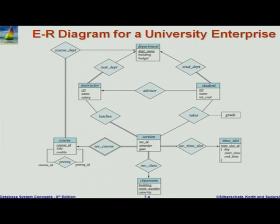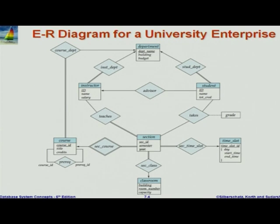So now, with the notations we have seen so far, let us look at the university enterprise. There are many things here: student entity, instructor entity, department entity, section which is a weak entity, course which is an entity, classroom which is an entity, time slot which is an entity, and then a whole bunch of relationships. If you see here, instructor is related to a department. Note that we did not put department name in instructor here. In the relational schema we did put the department name as an attribute, but here we don't. Similarly, students are linked to department by student-department, and students to instructors by advisors.